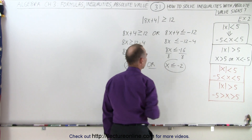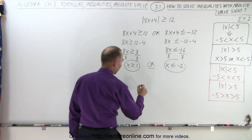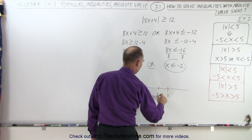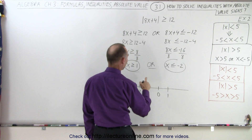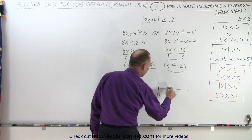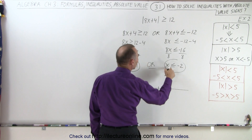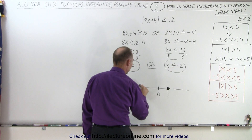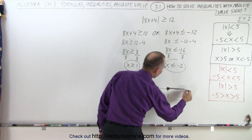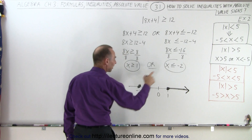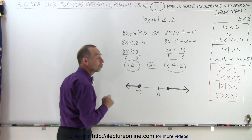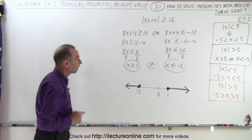This is an or condition. If we want to graph that, it looks like this: here we have 1, we have 0, and here we have negative 2. Notice that x greater than or equal to 1 includes the 1 and everything to the right. And x less than or equal to negative 2 includes negative 2 and everything to the left. And so that is the solution to our example problem.